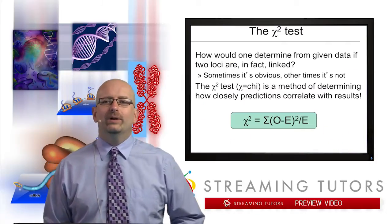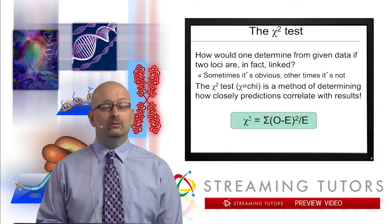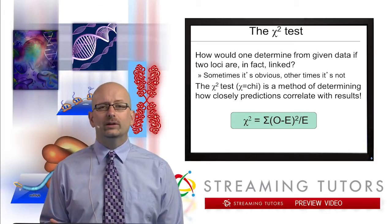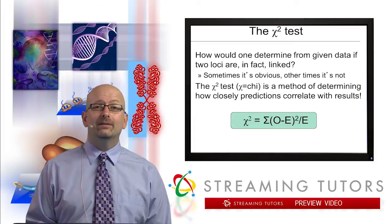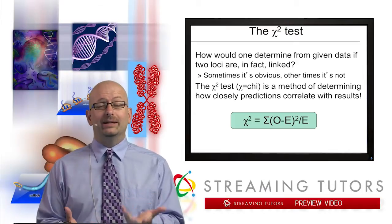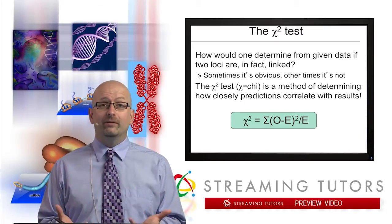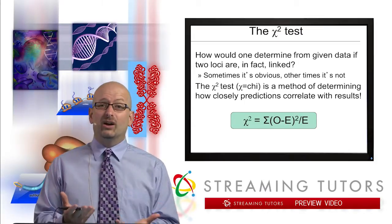So the real idea of this is we've seen situations where genes are not linked, we've seen situations where they're clearly linked, but we need some kind of statistical method of determining based on given data sets if two loci are in fact linked, because sometimes it's not 100% clear.